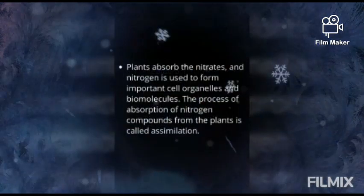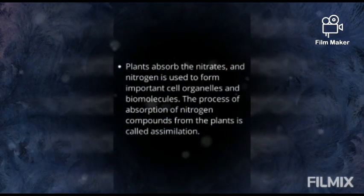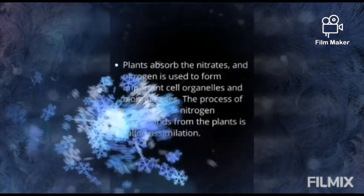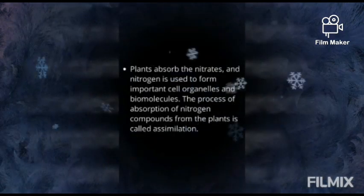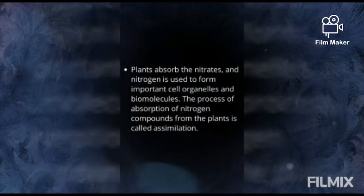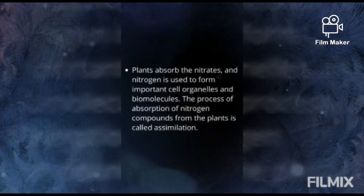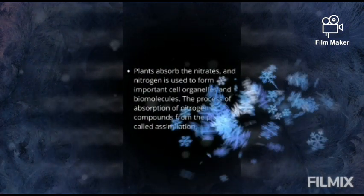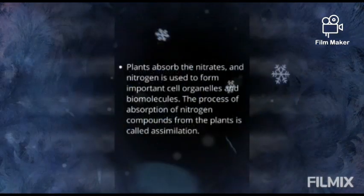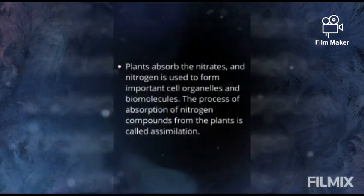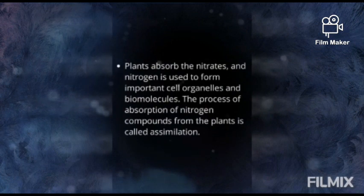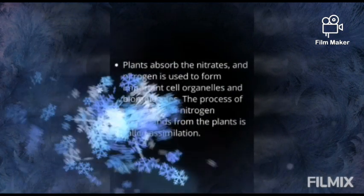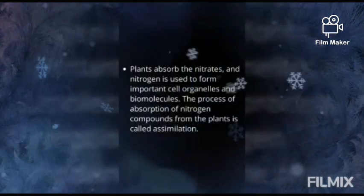Plants absorb the nitrates and nitrogen is used to form important cell organelles and biomolecules. The process of absorption of nitrogen compounds by plants is called assimilation.